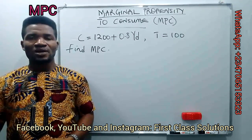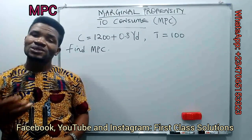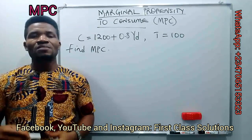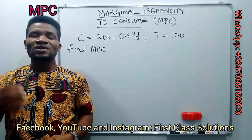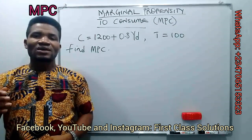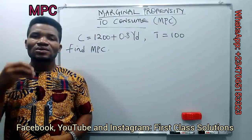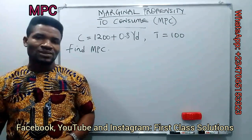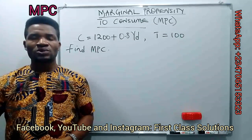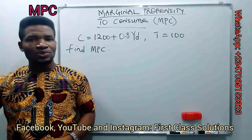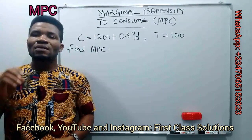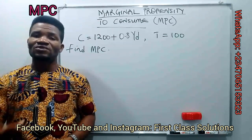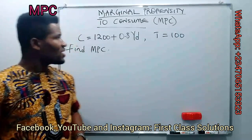an individual's extra income that is actually spent on consumption rather than being saved. In other words, it implies the individual's additional income that is actually spent on consumption of goods and services rather than being saved for future consumption. This implies further that marginal propensity to consume is actually derived from an individual's consumption function.